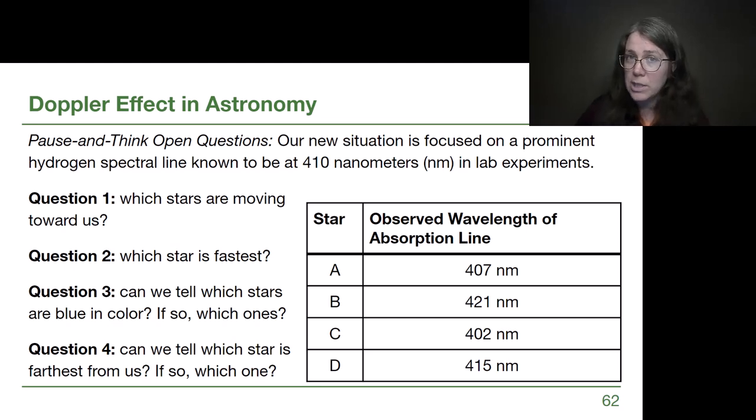For question three, another chance for us to confront this misconception, we cannot tell which of these stars is blue in color. Blue shifting does not mean that a star looks blue. So we cannot tell which stars are blue in color for question three. And then for question four, can we tell which star is farthest from us?